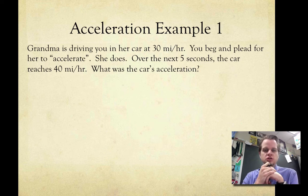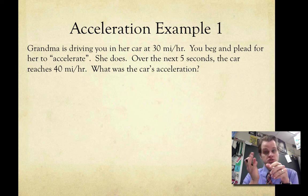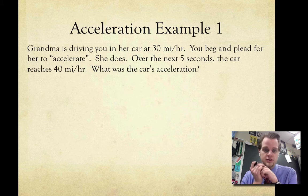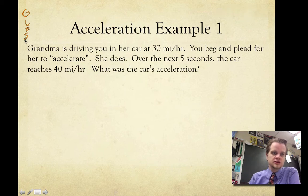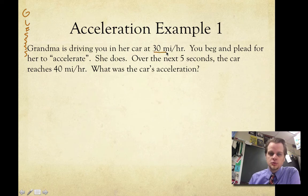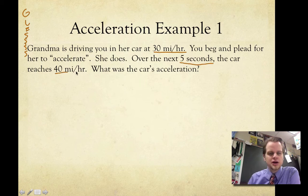Grandma is driving you in her car at 30 miles per hour. You beg and plead for her to accelerate. She does. And over the next 5 seconds, the car reaches 40 miles an hour. What was the car's acceleration?